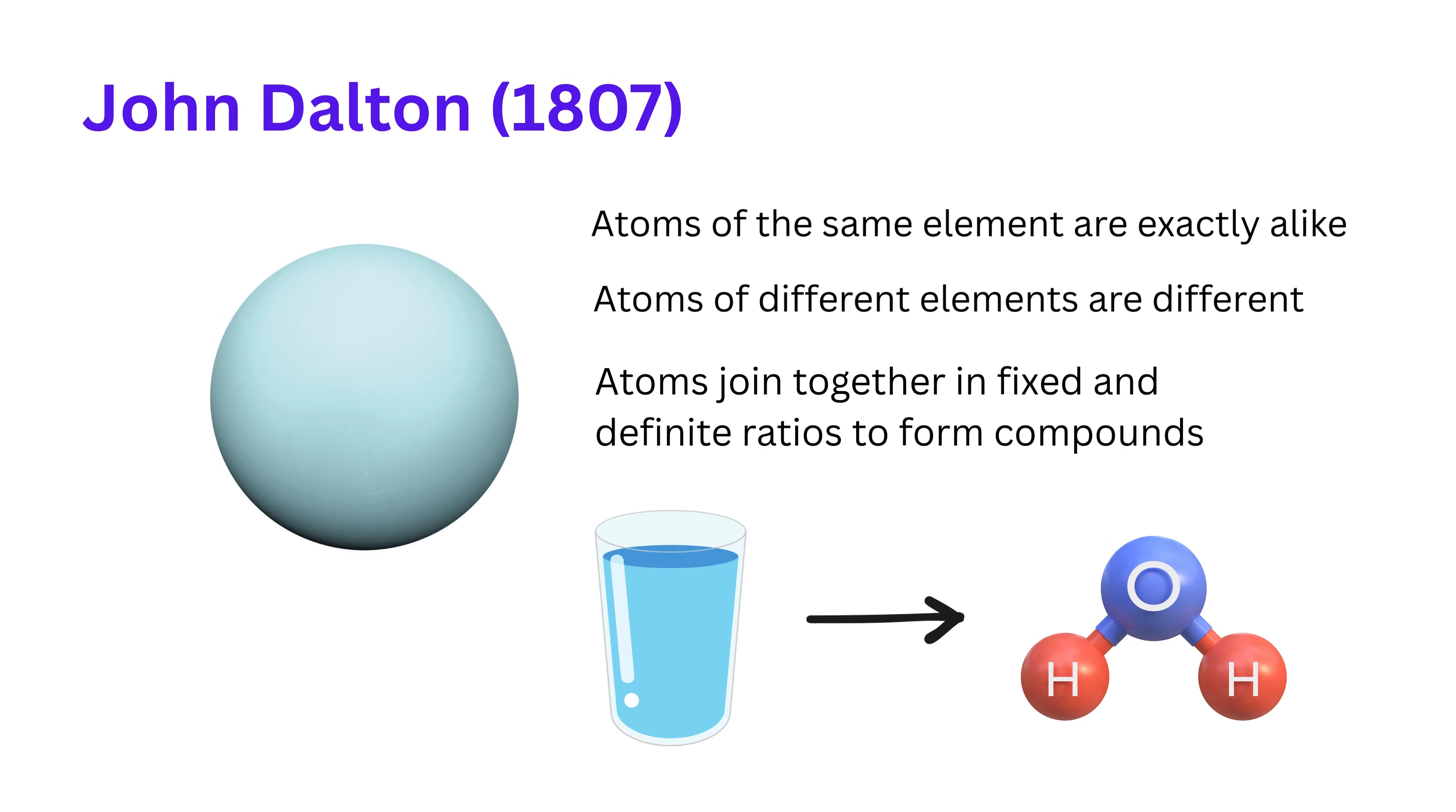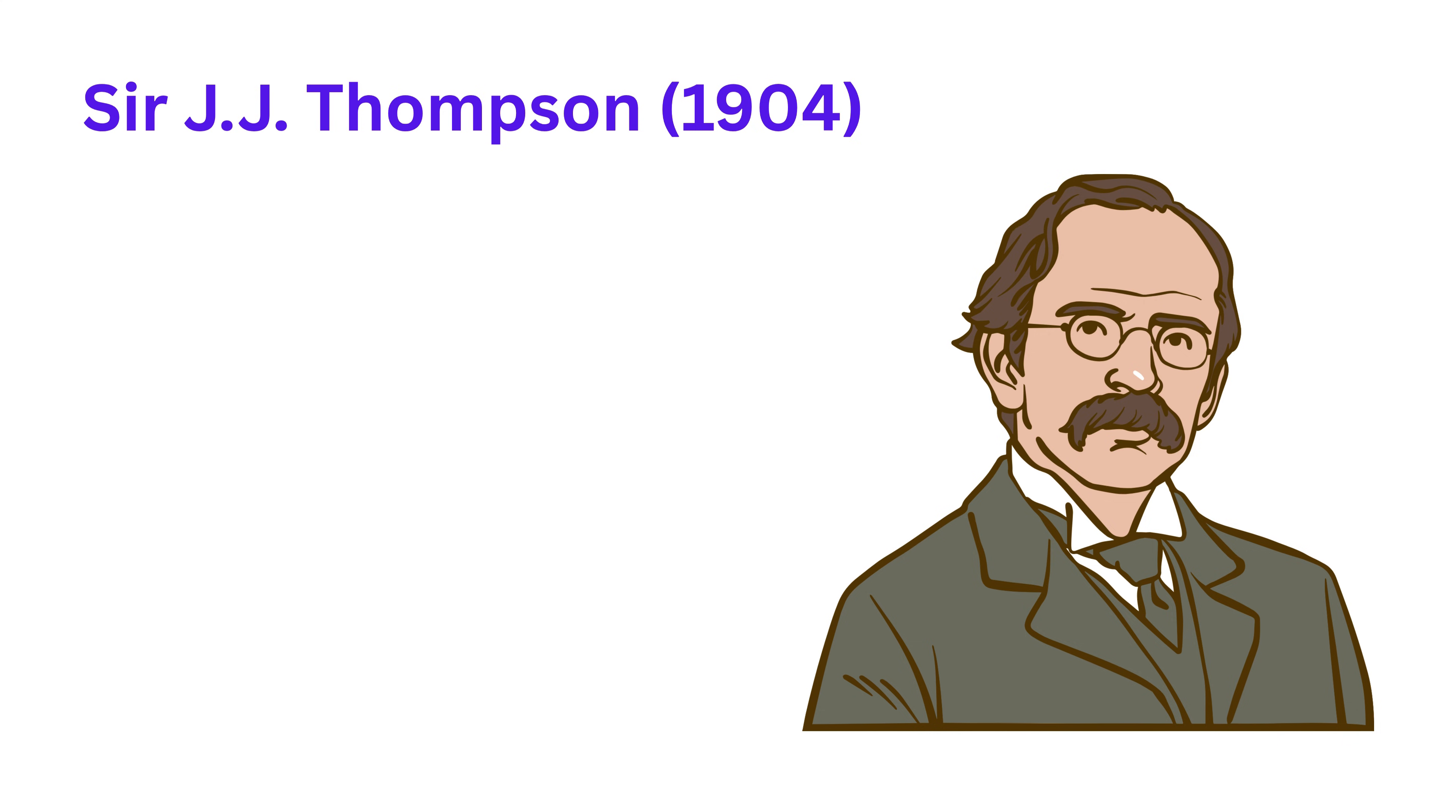Then, in the year 1904, Sir J.J. Thompson entered the picture. He discovered something very important, which was the electron, a tiny particle inside the atom with a negative charge.